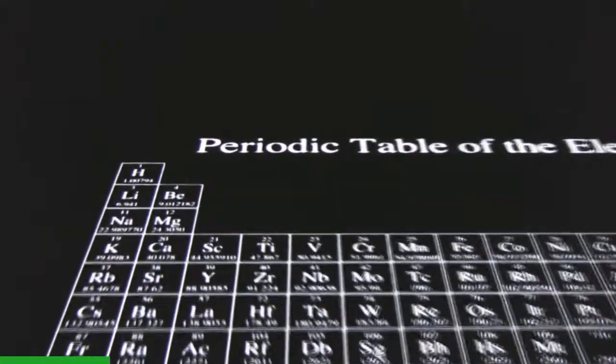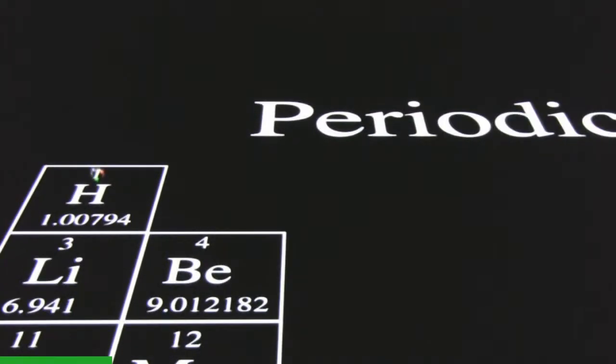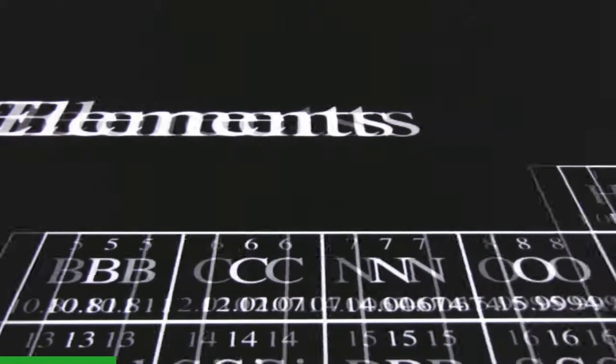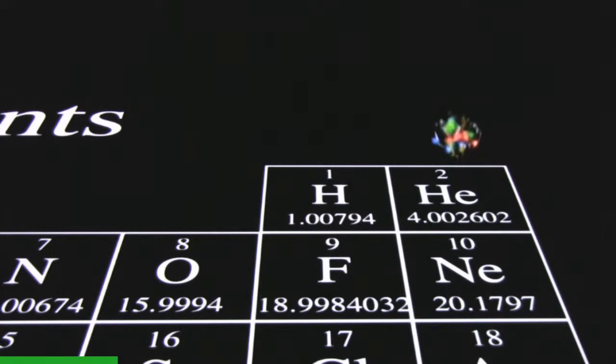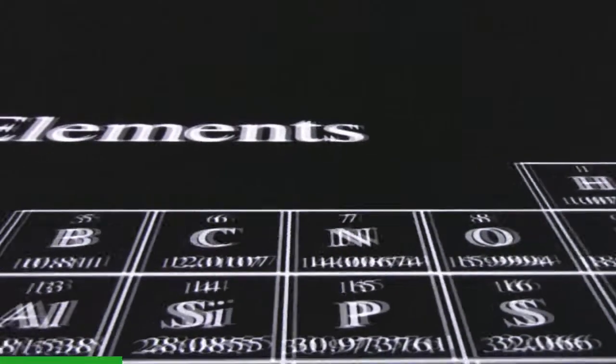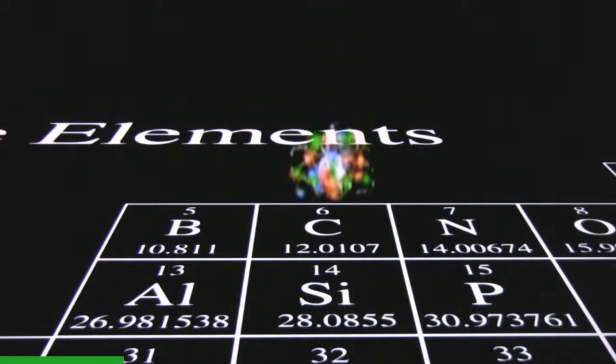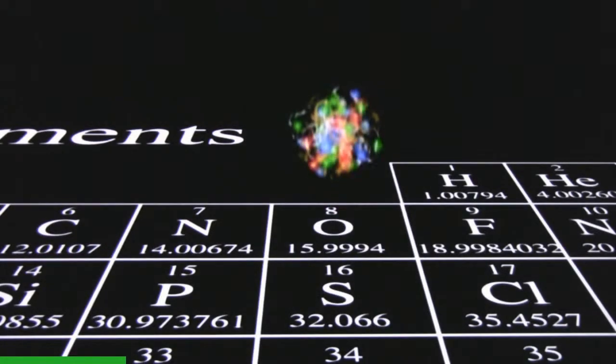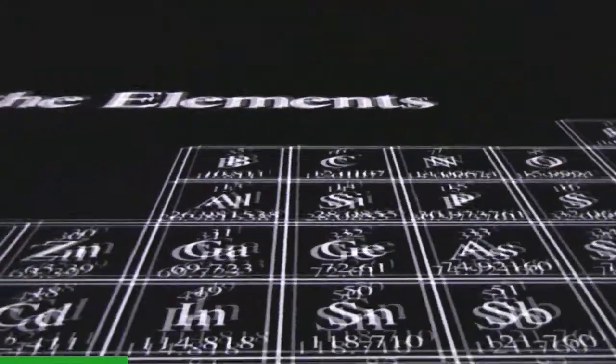These protons and neutrons can combine to form the nucleus of each element in the periodic table. One proton in the nucleus makes hydrogen; two form helium; six carbon; eight oxygen. Neutrons help hold the protons together, because due to their electric charge, protons would repel each other more strongly if neutrons were not present, and the heavier elements would come apart. There are approximately as many neutrons in each element as there are protons.